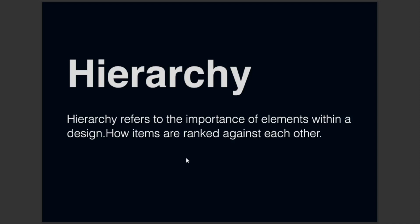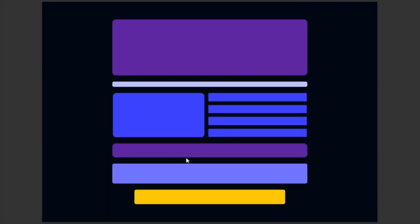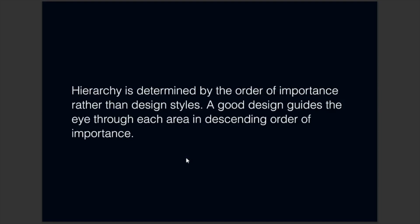Next is hierarchy. Hierarchy refers to the importance of elements within a design — how items are ranked against each other. Here is a pictorial example of what hierarchy is in design. Hierarchy is determined by the order of importance rather than design styles. A good design guides the eye through each area in descending order of importance.